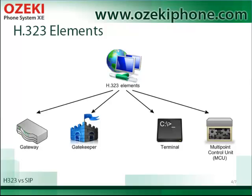H.323 consists of terminal, gateway, gatekeeper and multipoint control unit. Terminals are the endpoints of the communication — actually, they can be the IP phones. The gateways connect H.323 networks to other networks such as PSTN or ISDN networks. Gatekeepers are responsible for building connections, and the MCUs manage multipoint conferences.